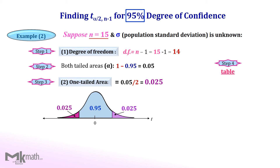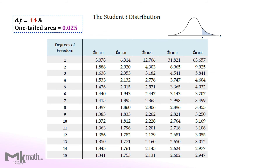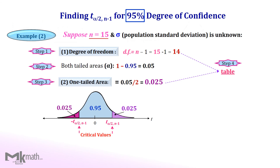Finally, look up the t-table using 14 degrees of freedom and a one-tailed area of 0.025. Locate 14 degrees of freedom and one-tailed area of 0.025 from the top row. Read the intersection to get the t-score of 2.145. We found the positive critical value 2.145, and we should also have the negative critical value −2.145. So the t-critical values are ±2.145 for the 95% confidence level with a sample size of 15.